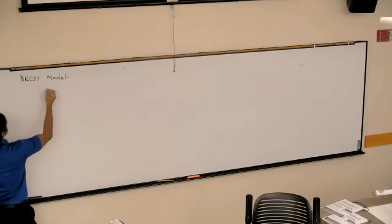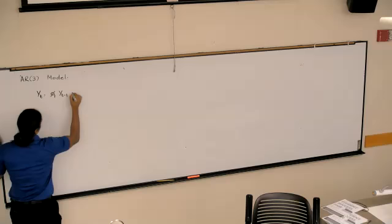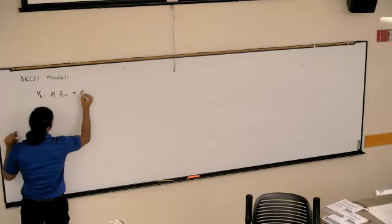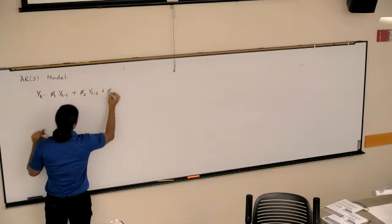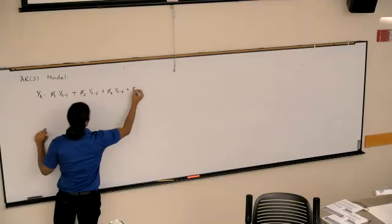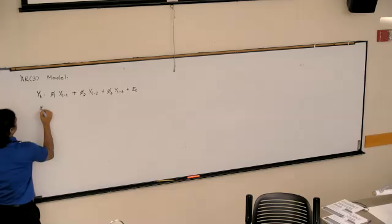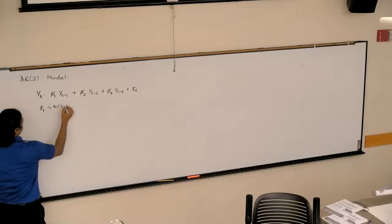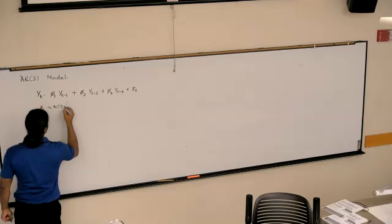So our AR3 model is YT equals phi 1 YT minus 1, plus phi 2 YT minus 2, plus phi 3 YT minus 3, plus epsilon T. As always, we have epsilon T to be normal, zero sigma squared, not just one.